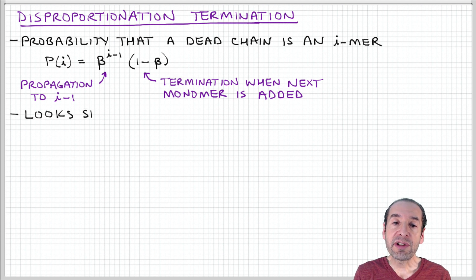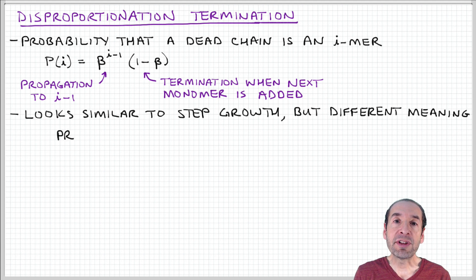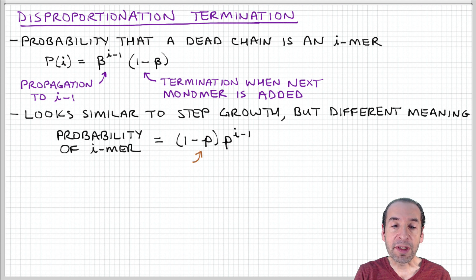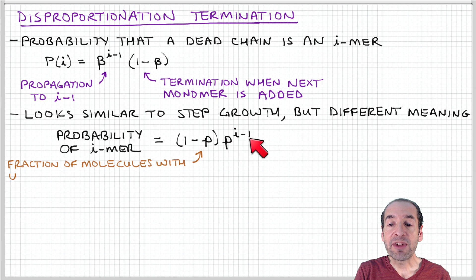We can notice that this result actually looks analogous to the result that we obtained in step growth polymerization in terms of the extent of reaction P. We got the probability of forming an i-mer was equal to (1-P) times P^(i-1).